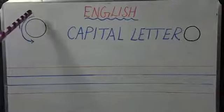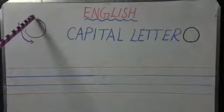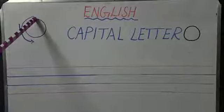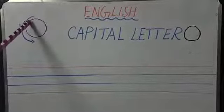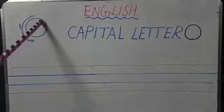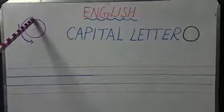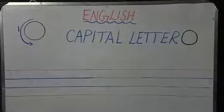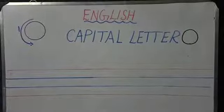The starting point is on top. You are going to start from up and turn towards your left — towards your left hand. You are going to make a curve and join the dot again, without taking out your hand. You should not take out your hand when you are writing letter O.